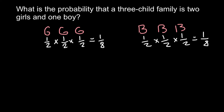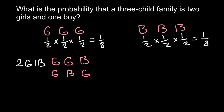Now, what are the possible variants for two girls and one boy? We have a variant where the first child is a girl, the second child is a girl, and the third child is a boy. Another variant: first child is a girl, second child is a boy, and third child is a girl. And another variant: first child is a boy, second child is a girl, and third child is also a girl. So there are three different variants for two girls and one boy.